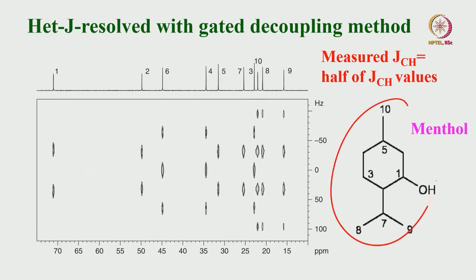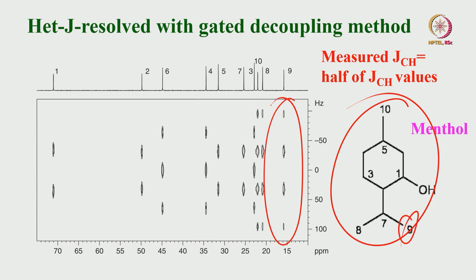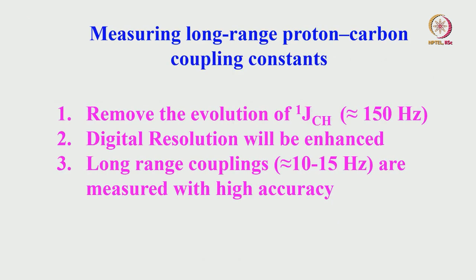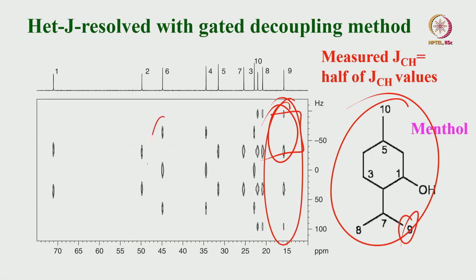Looking at this heteronuclear J-resolved experiment on a menthol molecule: different carbons are identified. For example, carbon 9 is a quartet. But do not directly measure this separation and say it is J-coupling — it is only half J because it is a gated-decoupled heteronuclear J-resolved. I am giving an example of how we can do different types of J-resolved experiments. To enhance intensity we can do this, but you have to be careful in interpreting: the J-couplings are not the full value but half the value.